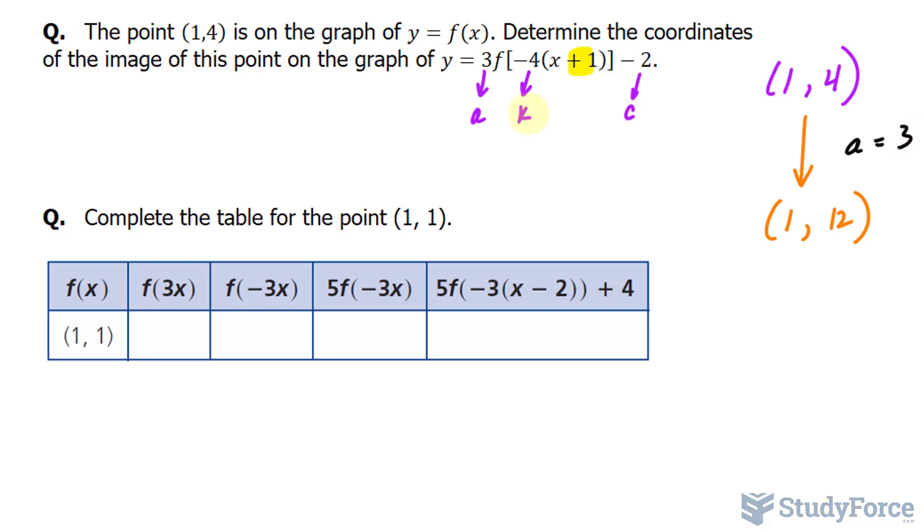In our next transformation, we will consider k. Now k is written here as negative 4, but I'll just take it as 4 for now. So our next transformation is applying k being positive 4. When you have a k value that is greater than 1 or less than negative 1, you have a horizontal compression, and it is a horizontal compression by a factor of 1 over k. So you take this value of 4 and you write it down as 1 over 4.